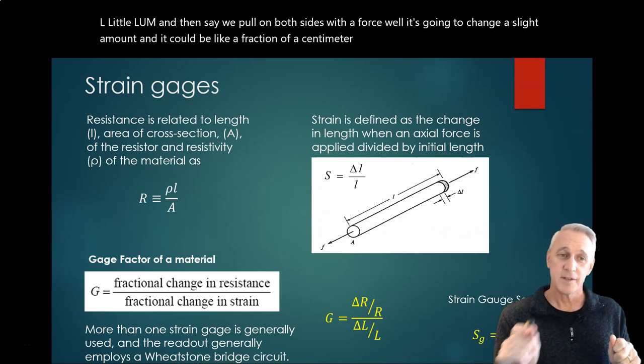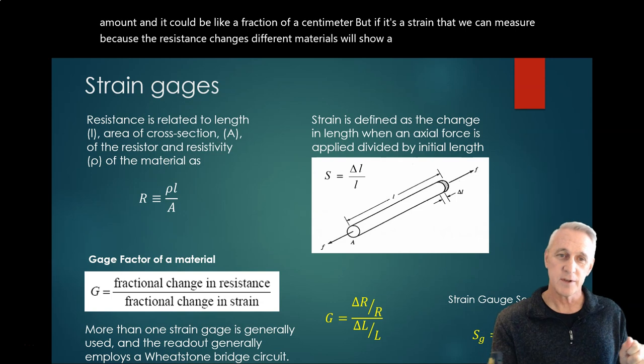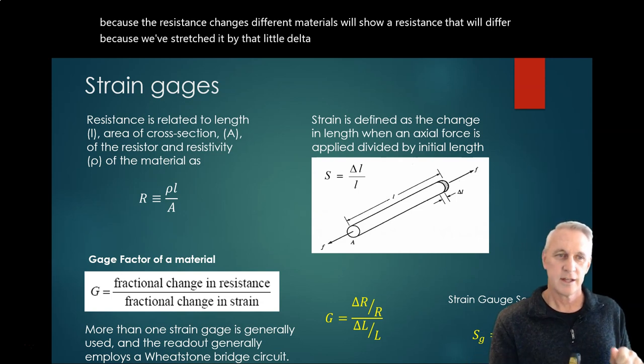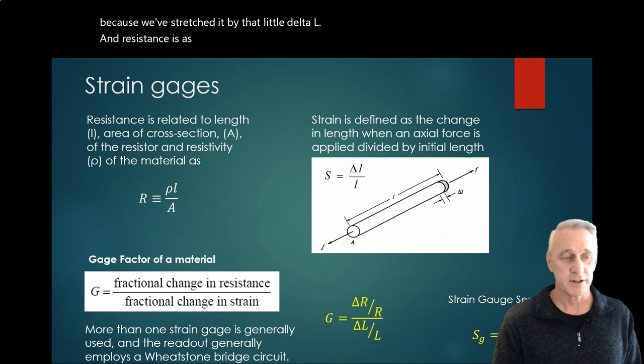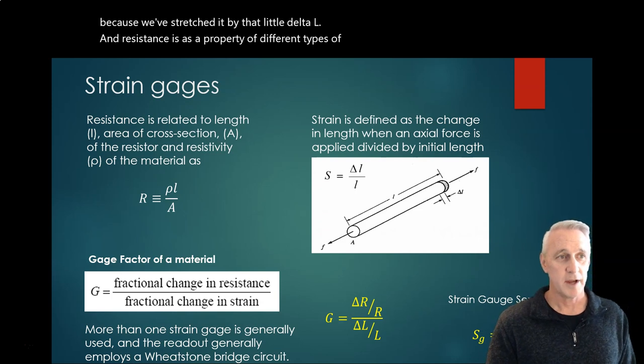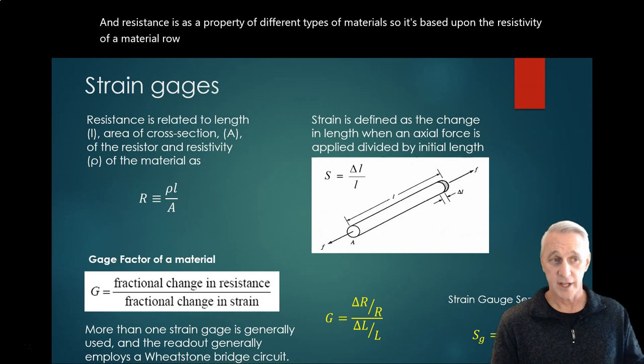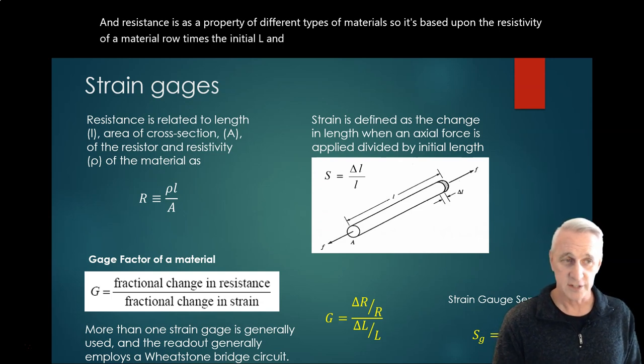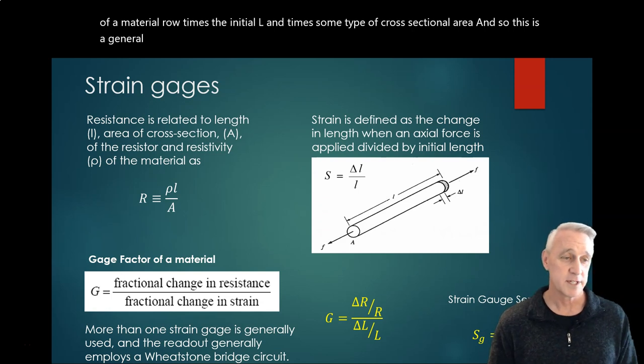But if it's a strain that we can measure because the resistance changes, different materials will show a resistance that will differ because we've stretched it by that little delta L. So resistance is a property of different types of materials - it's based upon the resistivity of the material (rho) times the initial L and times some type of cross-sectional area. And so this is a general model for lots of different types of materials.